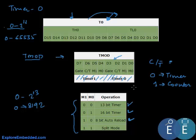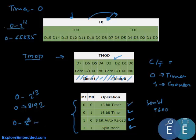The auto-reload mode is useful for generating a specific frequency, such as a baud rate of 9600 for serial communication. We will revisit this mode when covering serial communication. The final combination, Mode 3, is split mode, which splits Timer 0 into two separate 8-bit timers (TL0 and TH0 independently). Since they only count to 255, split mode is rarely used.